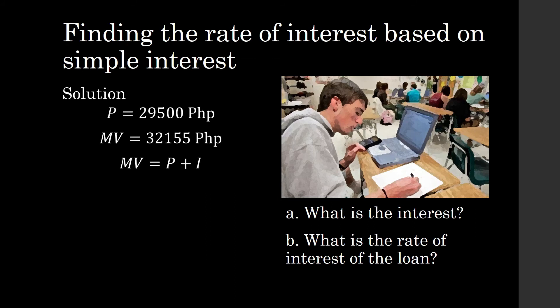But we know that the maturity value is equal to the principal plus interest. So if we are concerned with interest, interest is just maturity value minus the loan. That's just 32,155 minus 29,500. So interest is 2,655.